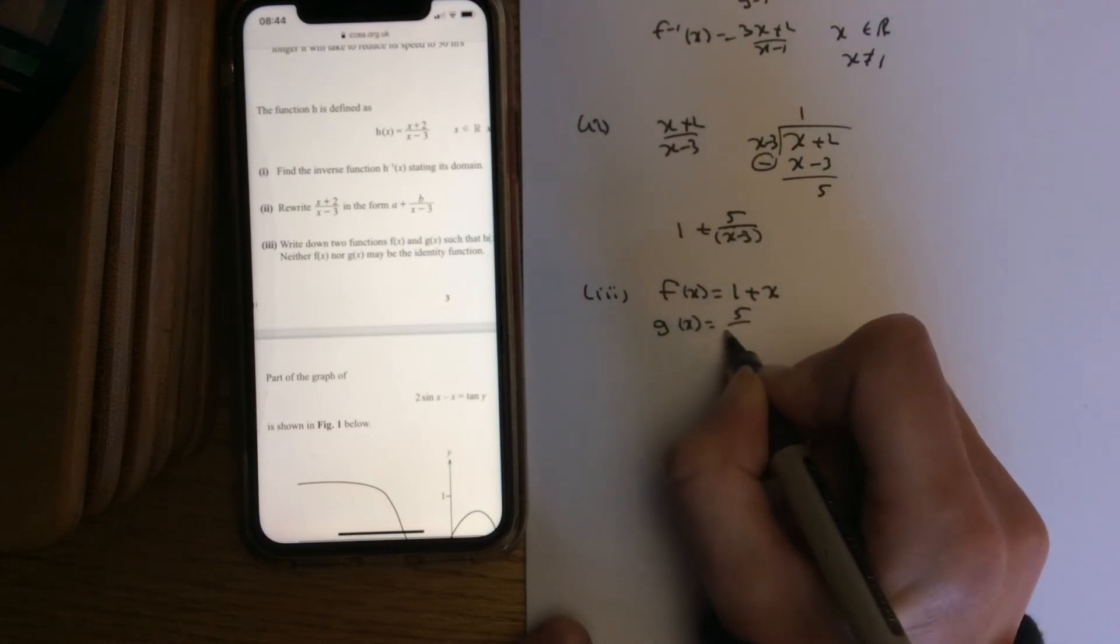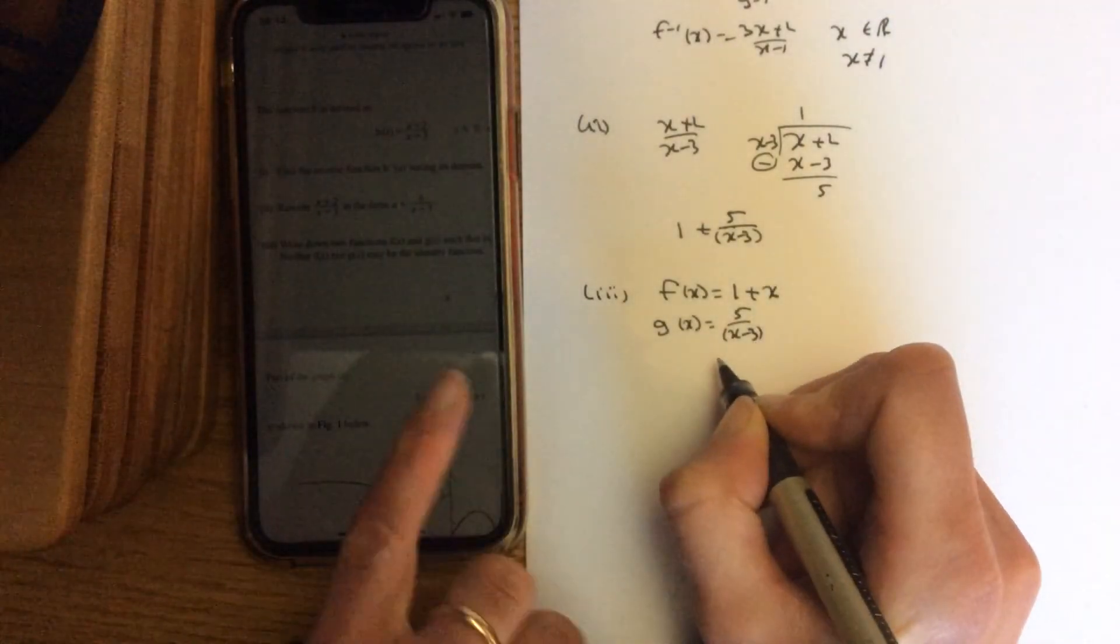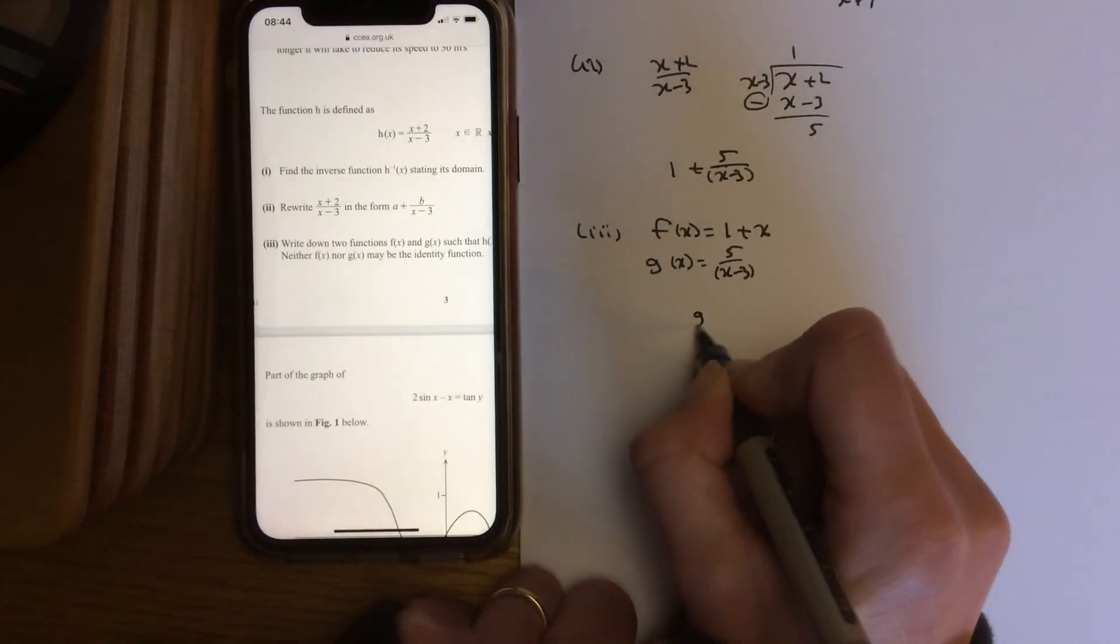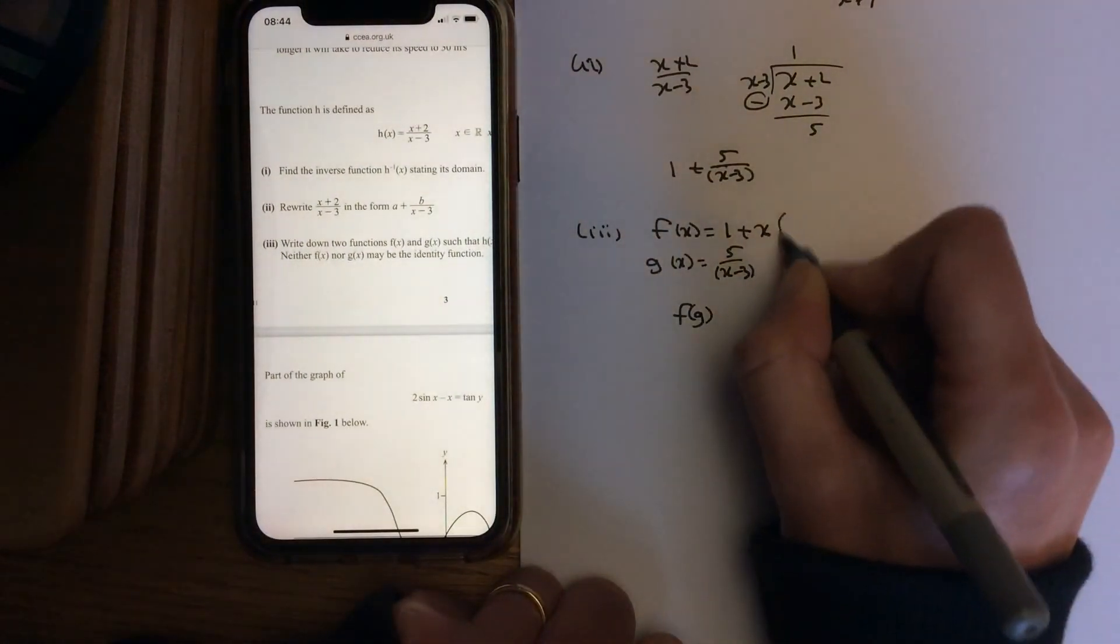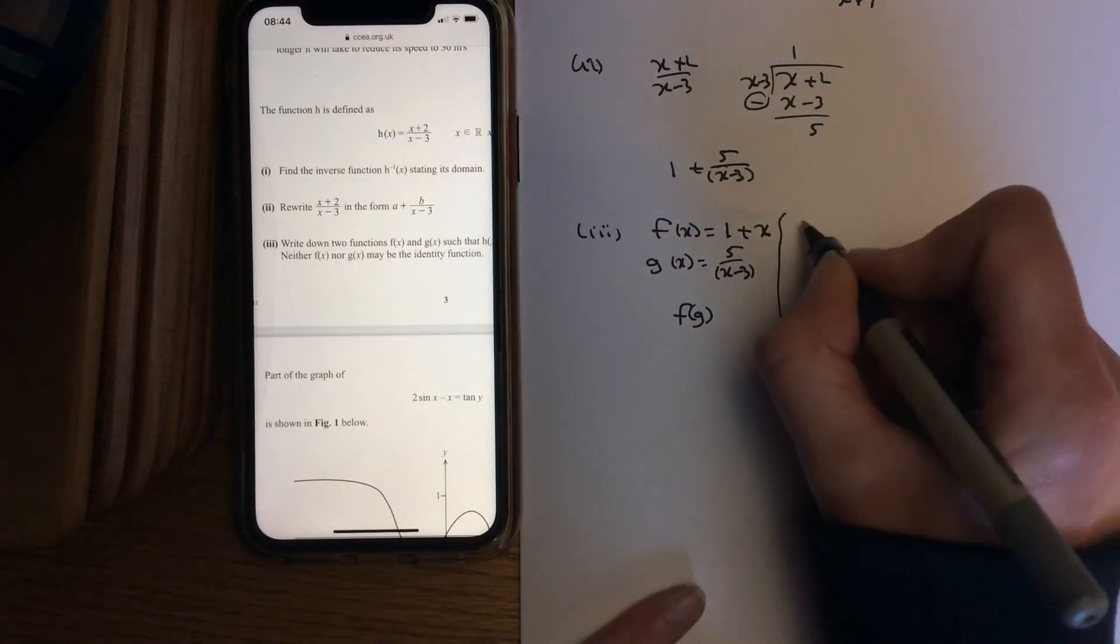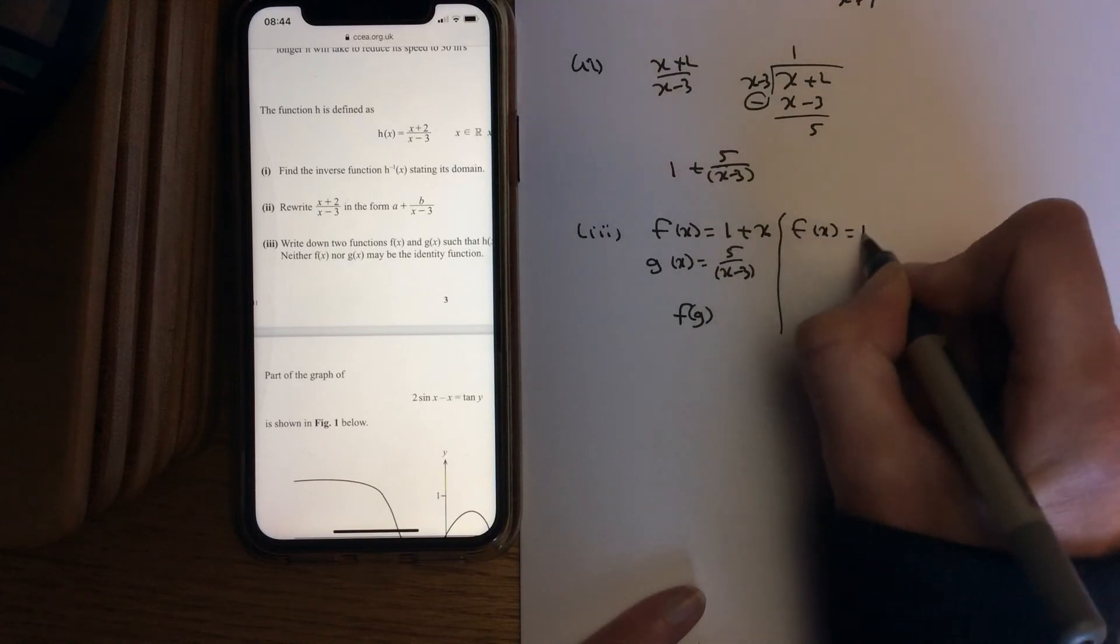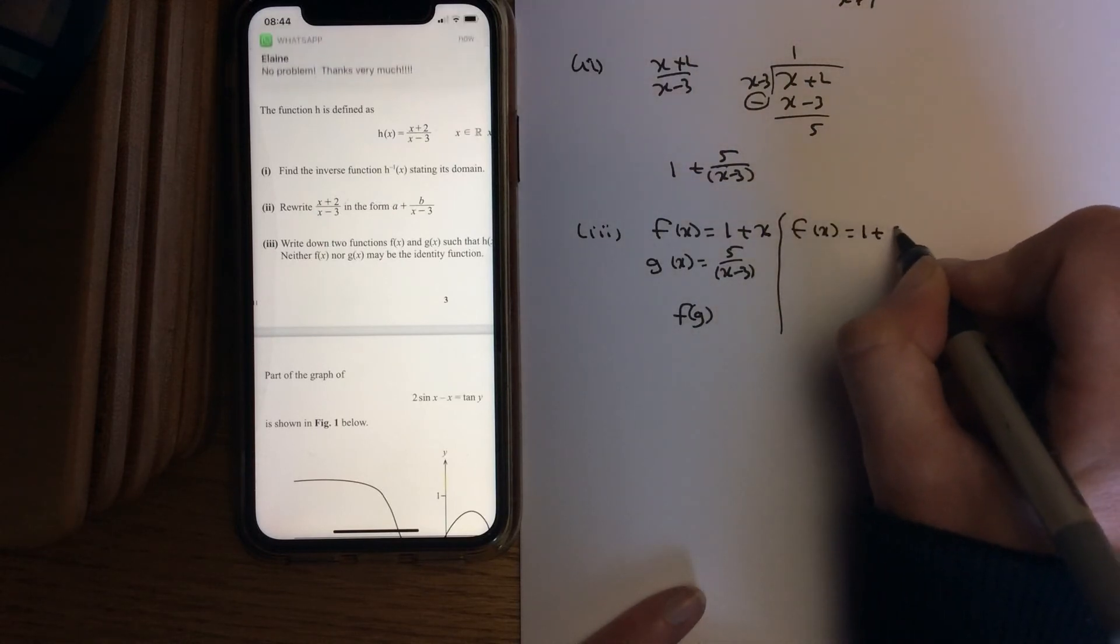The x value could be 5 over x-3, so what I would do in this case is put the g into the f. Another way you could write that same thing is you could have f(x) is 1 add 5 times your x function.